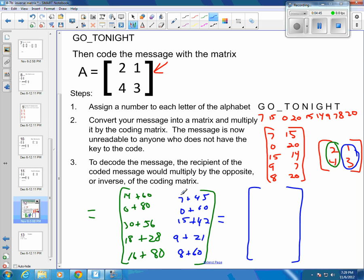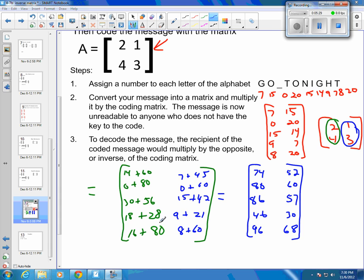Then I can do all my additions and get my matrix. So 14 and 60 is 74. 7 and 45 would be 52. 0 plus 80 is 80. 0 plus 60 is 60. 30 plus 56 is 86. 15 and 42 would be 40, 57. 18 and 28 would be 30, 46. 9 plus 21 would be 30. 16 and 80 would be 96. And 8 plus 60 is 68.